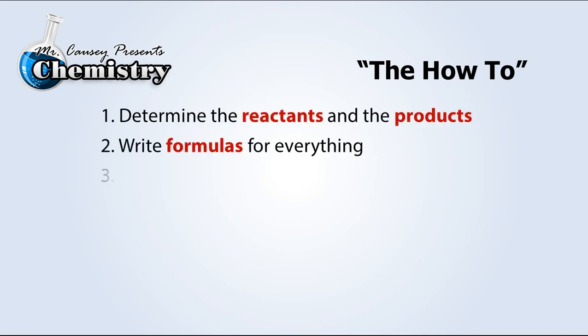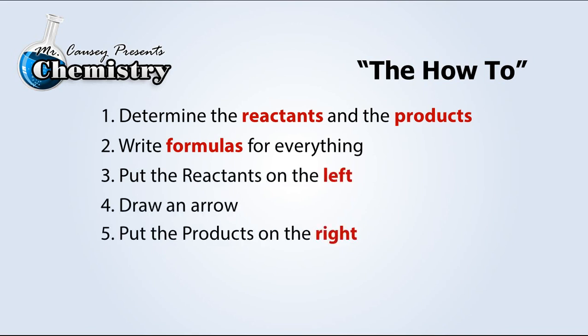Let's review the how-to in writing chemical equations. One, you need to determine the reactants and the products. Then you write formulas for everything. You put the reactants on the left and draw an arrow, then put the products on the right, and then balance.